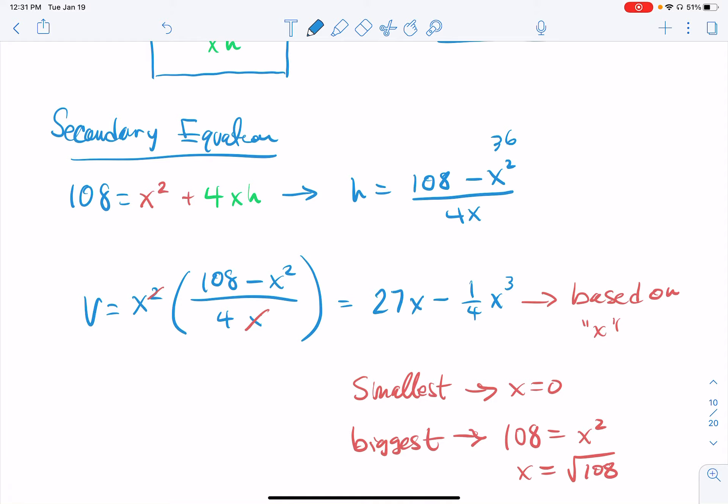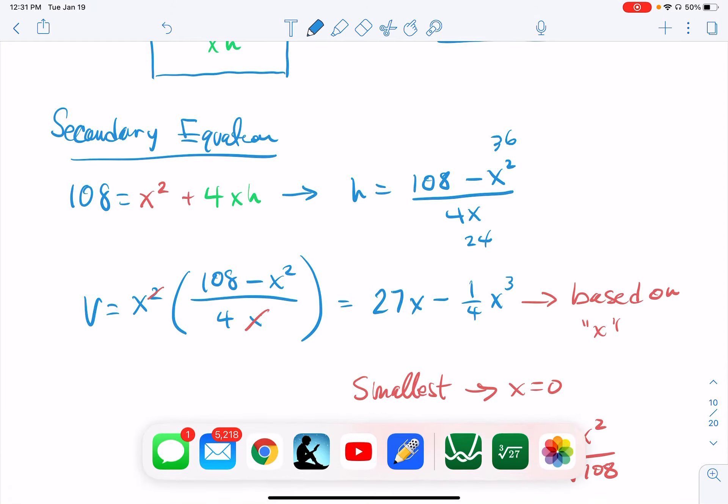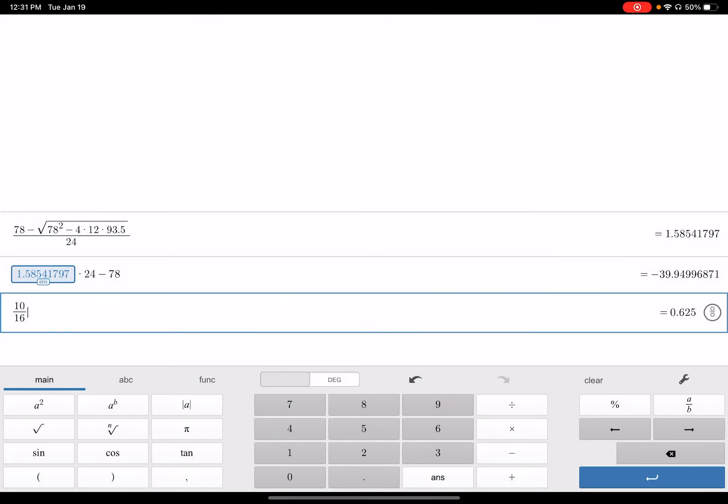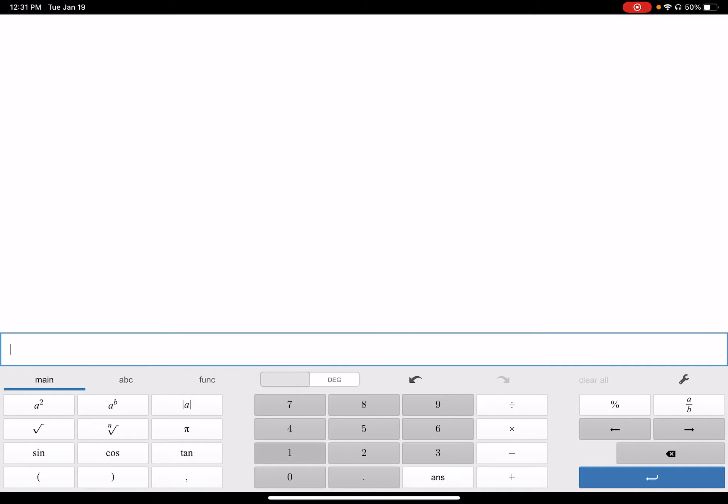So this is 36. And down here on the bottom is 24. 108 minus 36. 108. Here I go again. Hit the clear button. 108 minus 36 divided by 24.